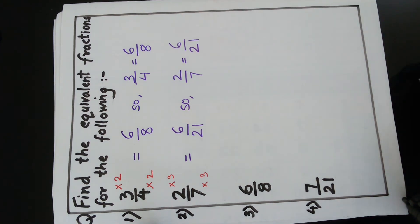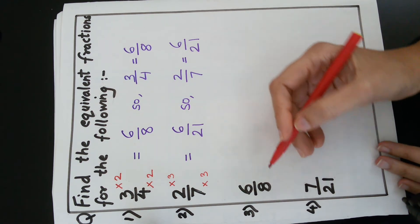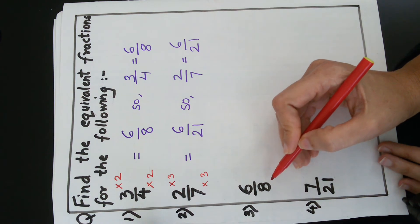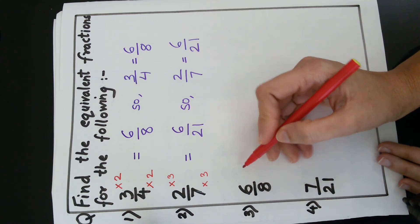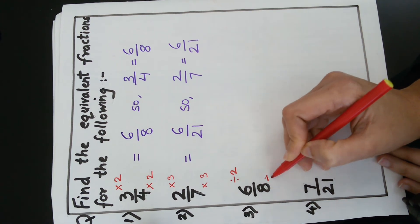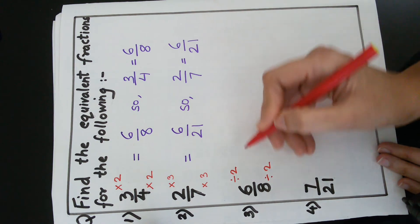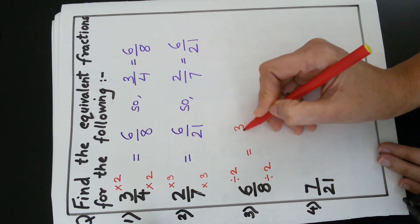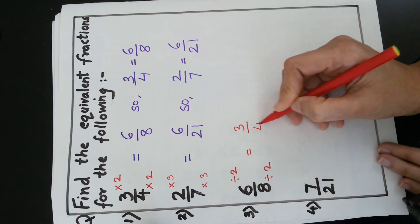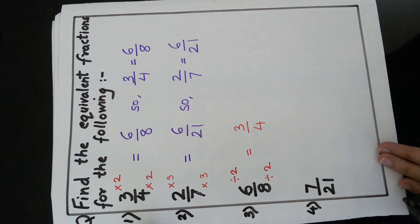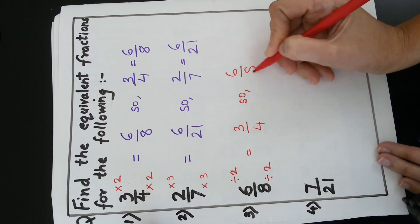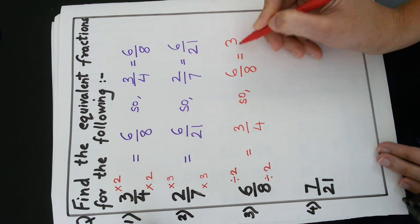Let us see the next example: 6 upon 8. We can see that 6 and 8 are even numbers, so I can divide both by 2. When I divide 6 by 2, I get 3, and when I divide 8 by 2, I get 4. So we can say that 6 upon 8 is equal to 3 upon 4.